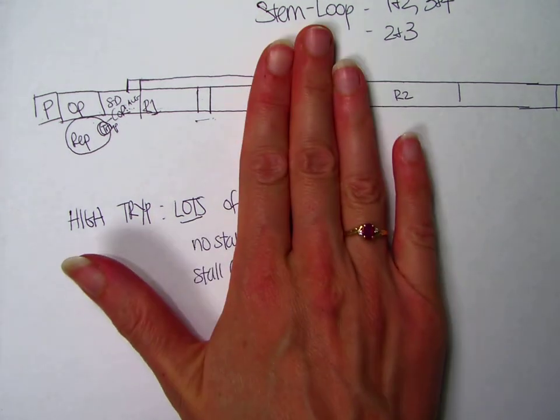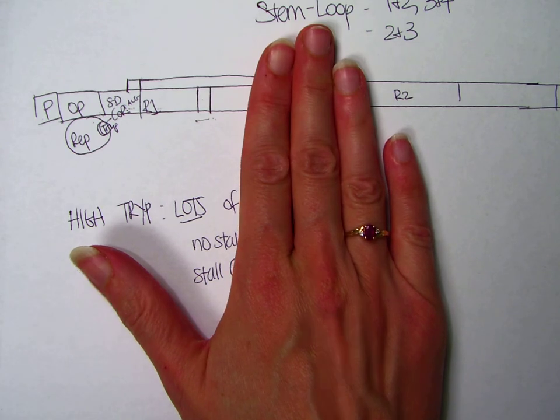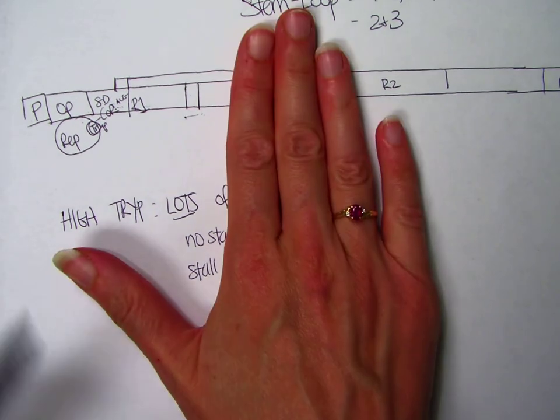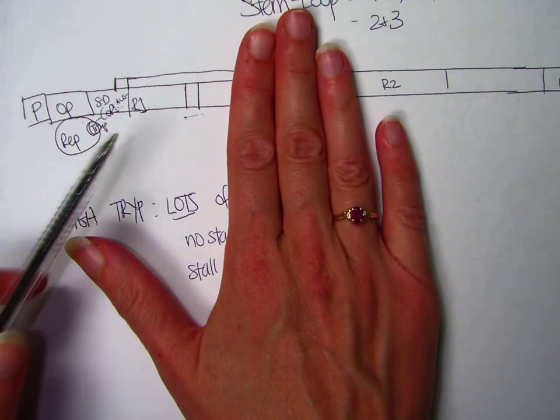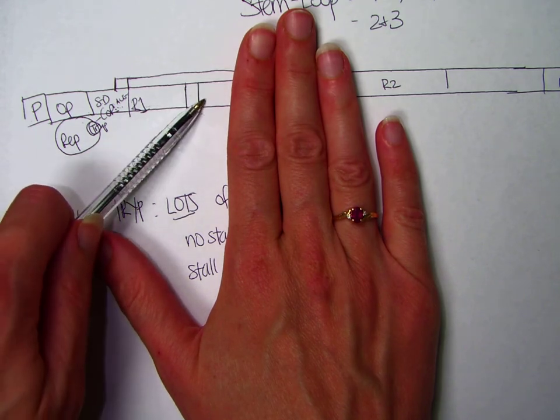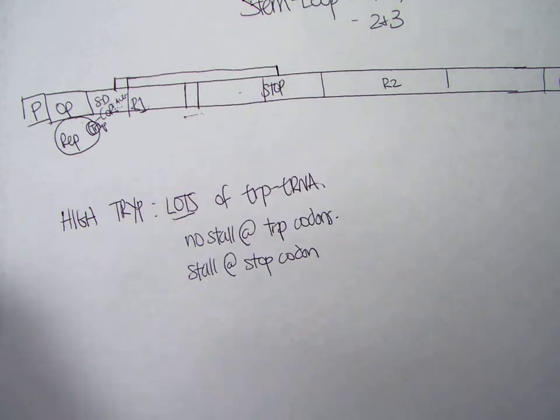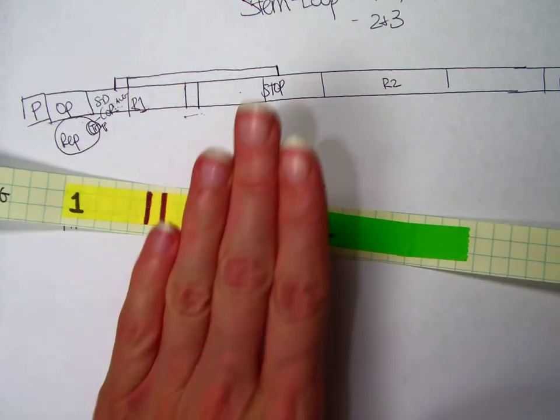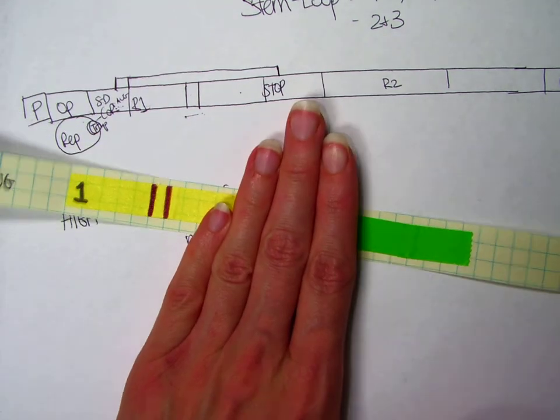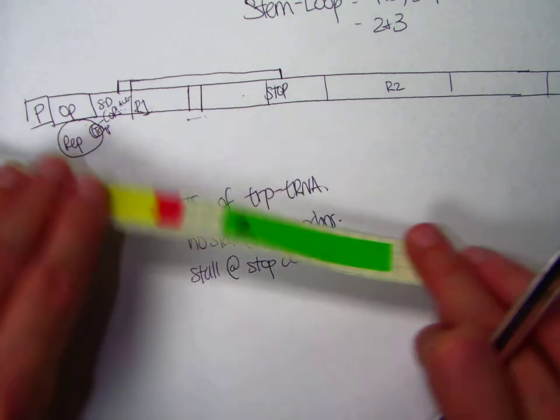So here is the ribosome, right on top of the stop codon. And so it's covering up, the ribosome covers up the back half of 1 and the front half of 2. So here's the ribosome, right here, over 1 and 2. So 1 and 2 cannot stem loop.